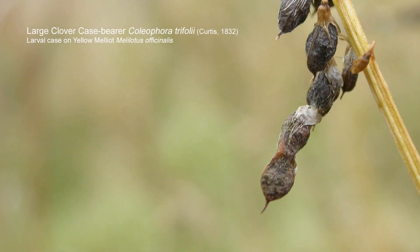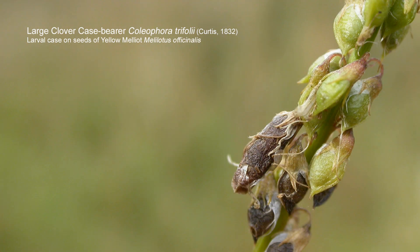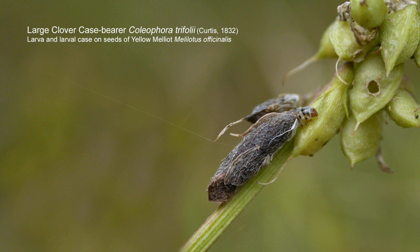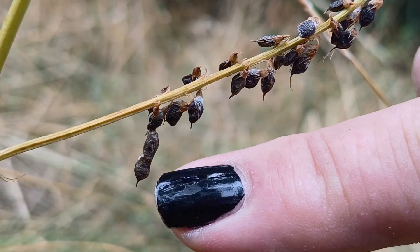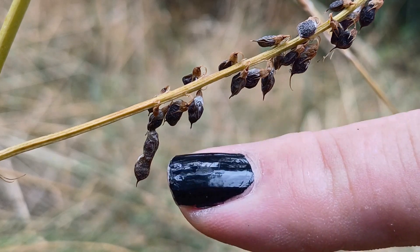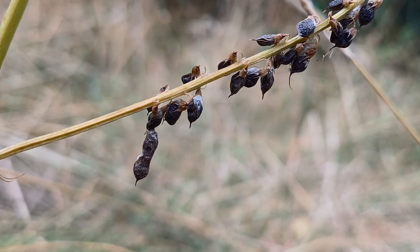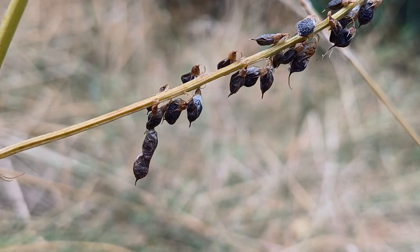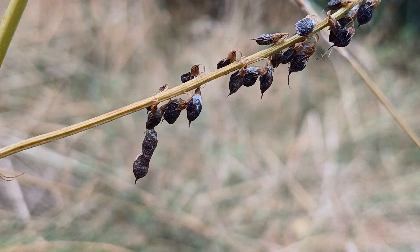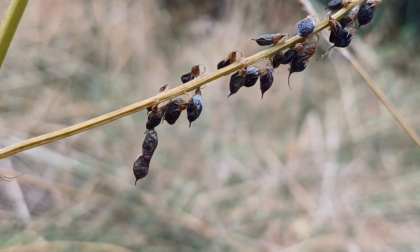Eggs are laid by the female, and the young larva burrows into a developing seed. As it eats the contents of that seed it needs to increase the size of the case, so it burrows into another seed and attaches that to the existing one — and that's what you can see here. There's the original seed and the case the larva created; it then fed on this seed and is now feeding on another seed, although I get the feeling these are now in the pupation stage.